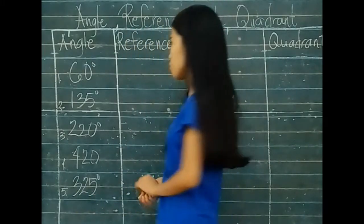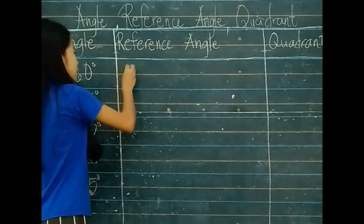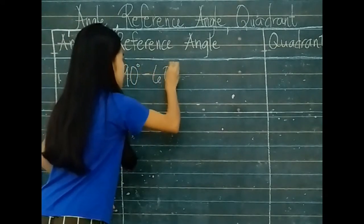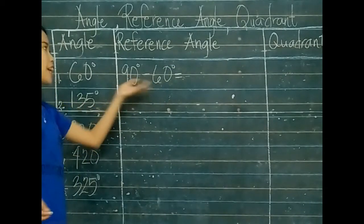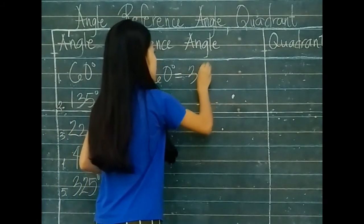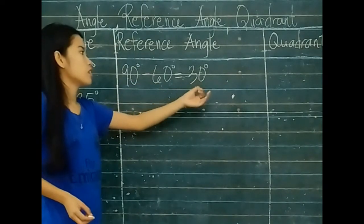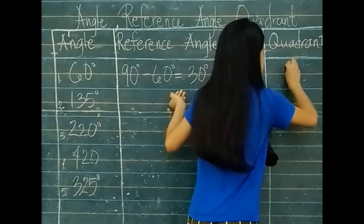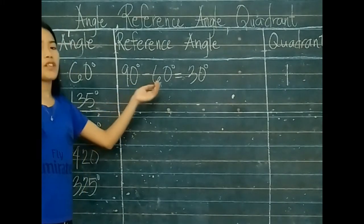To get the reference angle for 60 degrees: 90 degrees minus 60 degrees is equal to 30 degrees. So 60 degrees belongs to Quadrant 1, because 0 to 90 degrees is Quadrant 1.